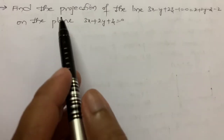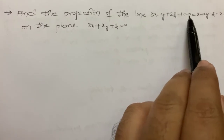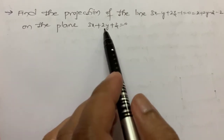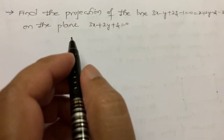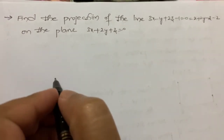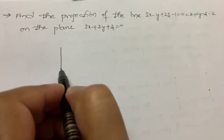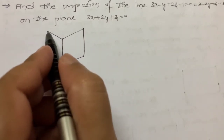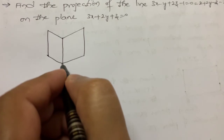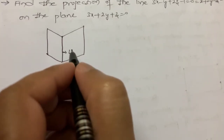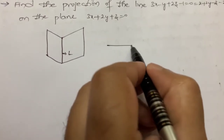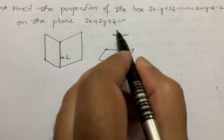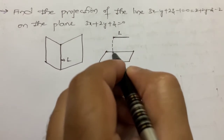Let's look at this problem. Find the projection of the line 3x minus y plus 2z minus 1 equal to 0, equal to x plus 2y minus z minus 2, on the plane 3x plus 2y plus z is equal to 0. The two planes will intersect and give a line, and what we want is the projection of this line on another plane.